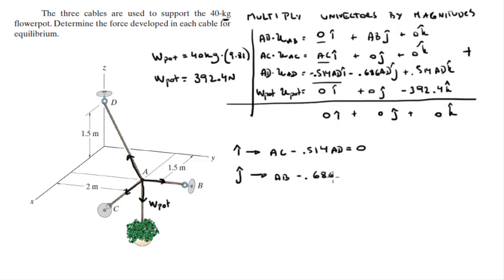And for the k you get that 0.514 AD minus 392.4 is equal to 0.